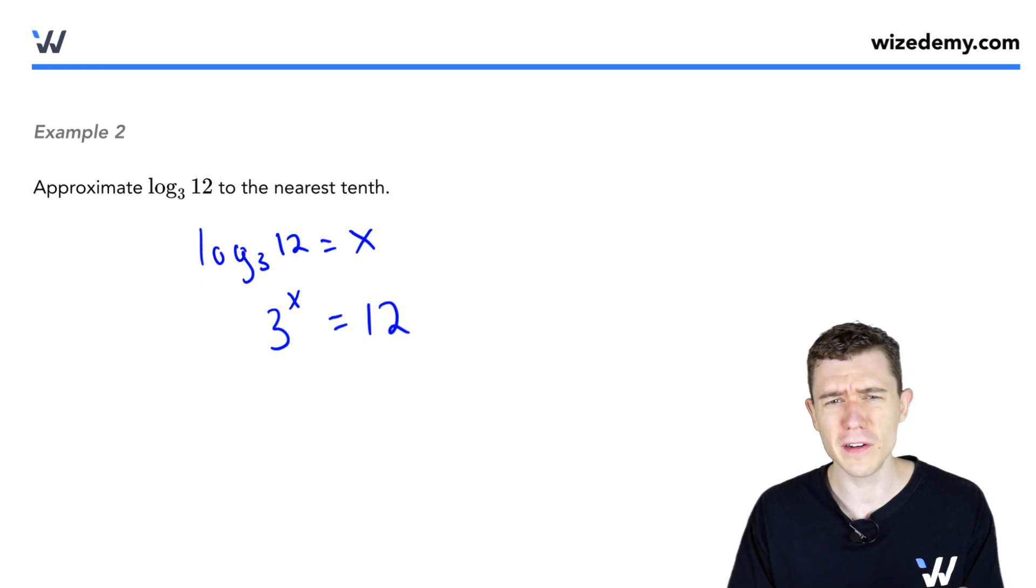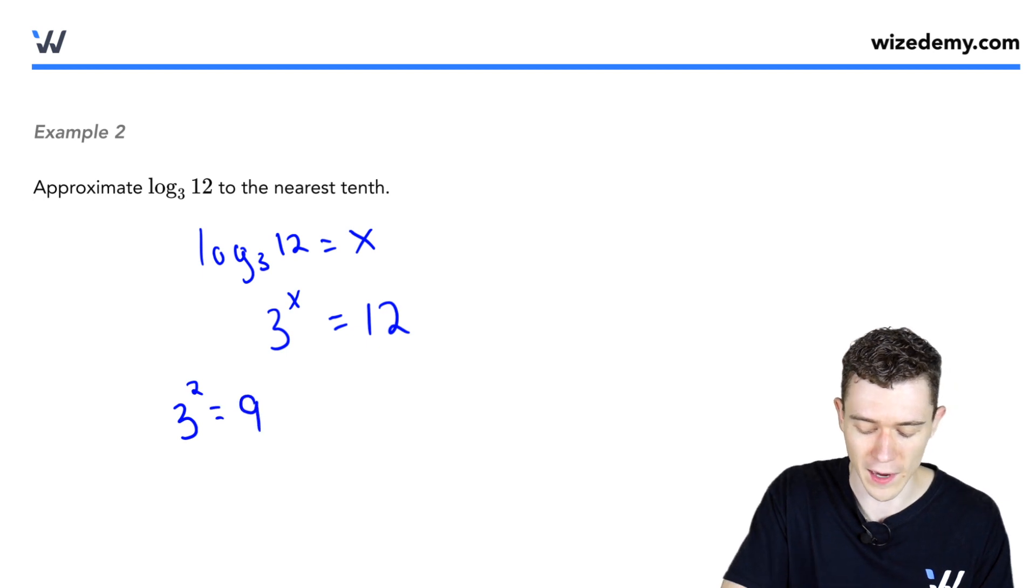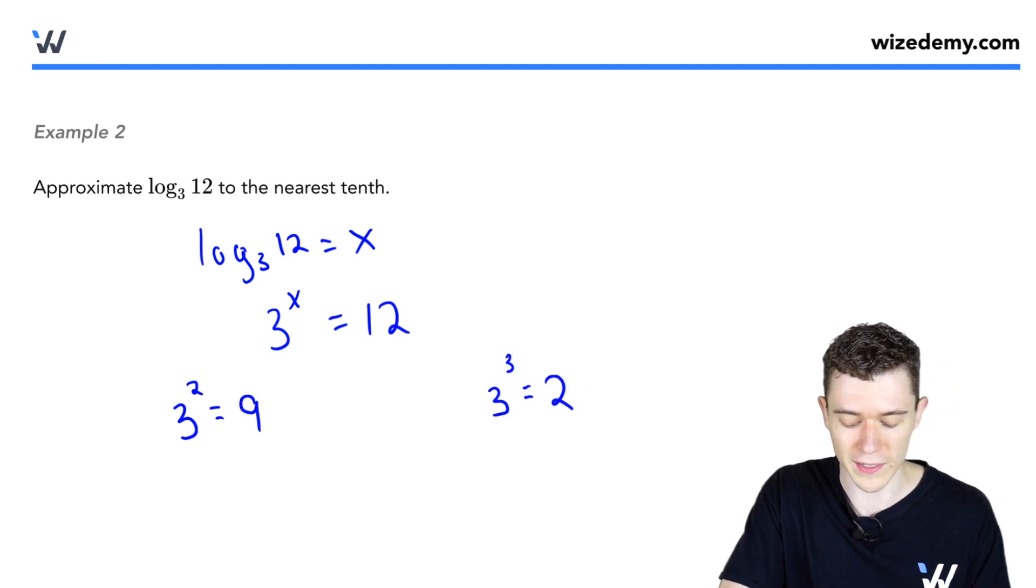Well, that's not a very straightforward question. We could look at some close things. For example, 3 squared, that's 9. 3 cubed, that's 27.